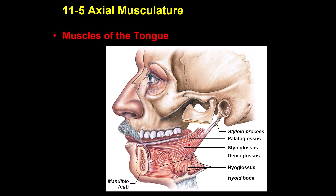The third one is called styloglossus, which causes retraction and also elevation of the tongue. The fourth one is called palatoglossus, which elevates the tongue as well. There is another muscle not labeled here — this is called geniohyoid, which is a muscle of the floor of the mouth.